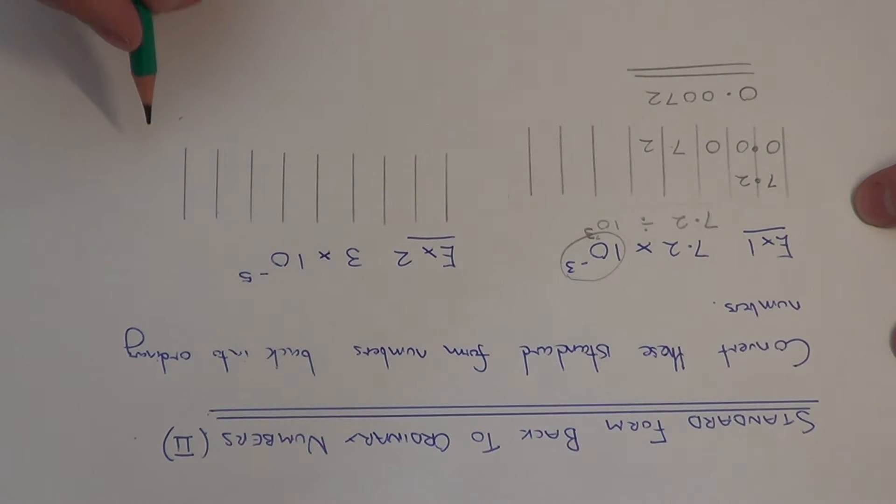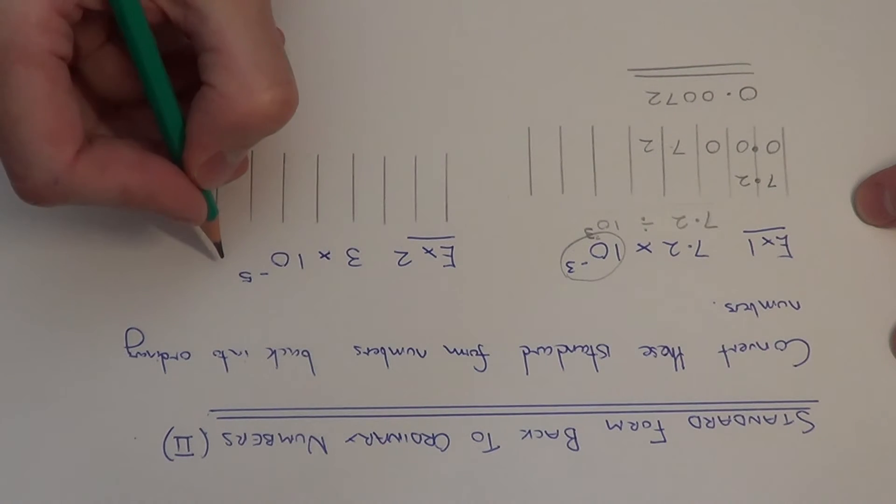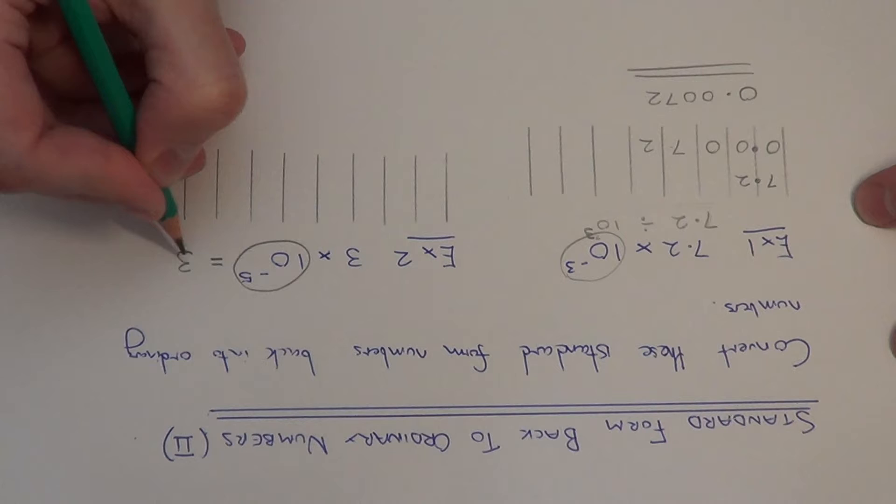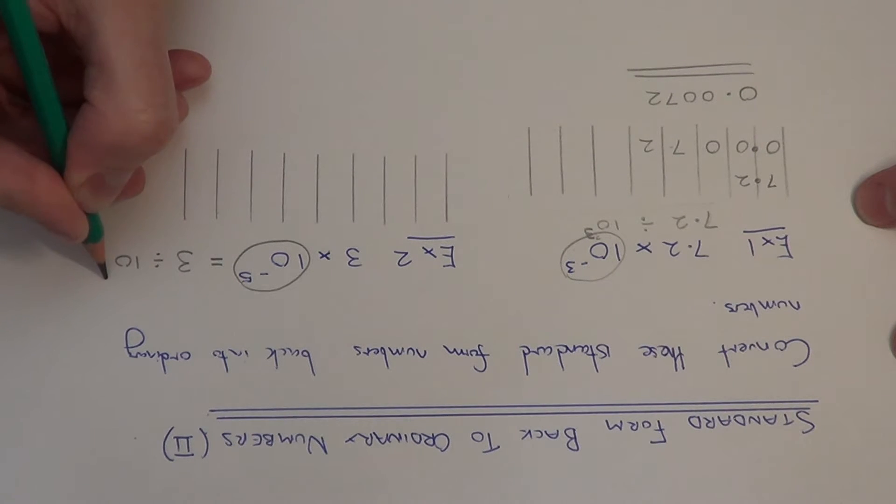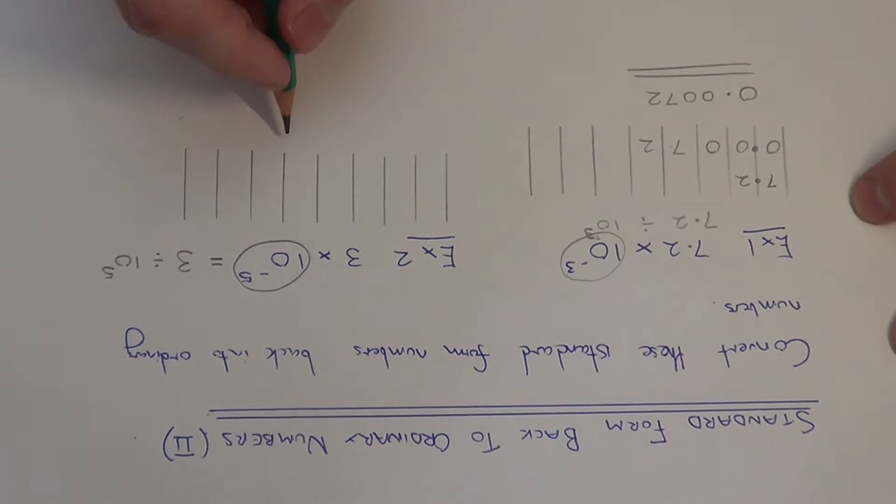So let's move on to example 2. So this time we've got 3 times 10 to the minus 5. So again this actually means we need to do 3 divided by 10 to the 5. So we have to divide the 3 by 10 and do this 5 times.